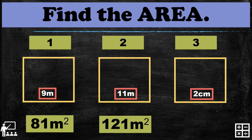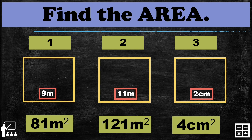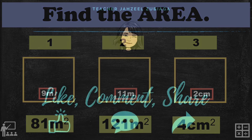For the second square, the answer is 121 meters squared. If you multiply 11 by 11, it gives you 121. For the last square, the answer is 4 centimeters squared. Multiplying 2 by 2 gives you 4, and centimeters times centimeters gives centimeters squared. Did you get all three examples right? Great job! See you in my next lesson.